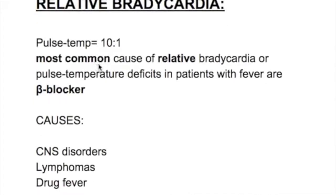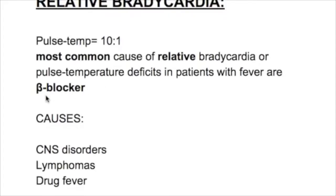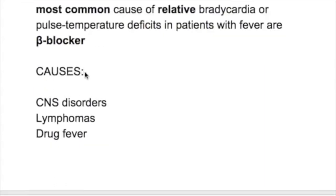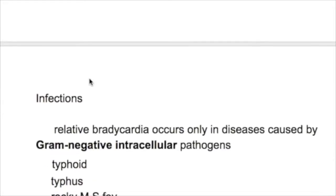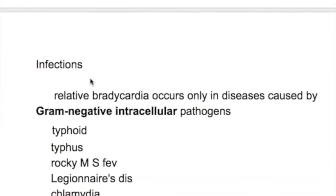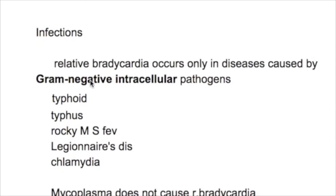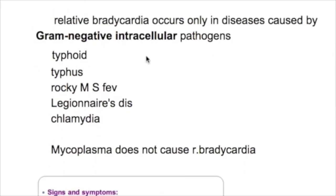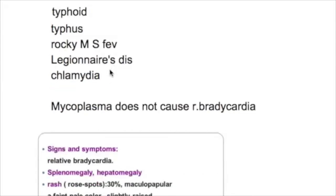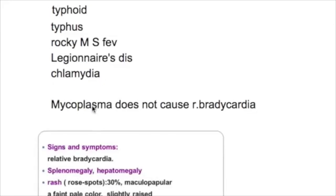What is the most common cause of relative bradycardia? The most common cause is use of beta blocker drugs. Other causes include CNS disorders, lymphoma, drug fever, and infections. Which infections cause relative bradycardia? Gram-negative intracellular pathogens cause relative bradycardia — they are typhoid, typhus, Rocky Mountain spotted fever, and Legionnaires' disease. Chlamydia and Mycoplasma do not cause relative bradycardia.